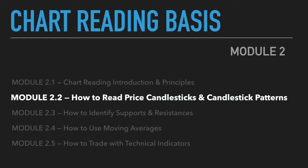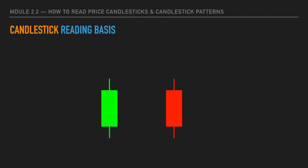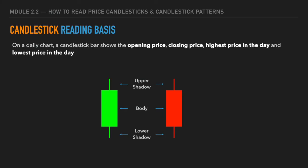Alright, let's get started. Candlestick is probably the most commonly used bar chart in technical analysis. This is how candlestick bars look like — they have an upper shadow, a body, and a lower shadow. Combined together, you have a candlestick. So how do you read a candlestick in a bar chart? In this tutorial I will use a daily chart example to explain how the candlestick bar works.